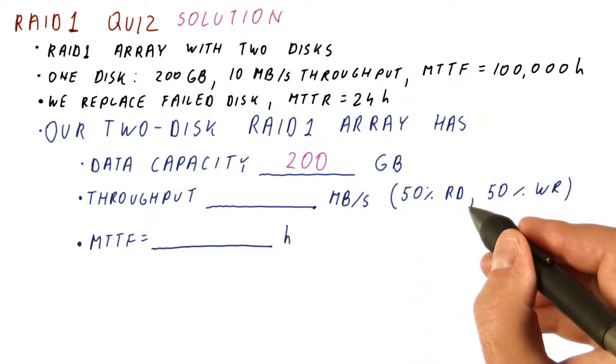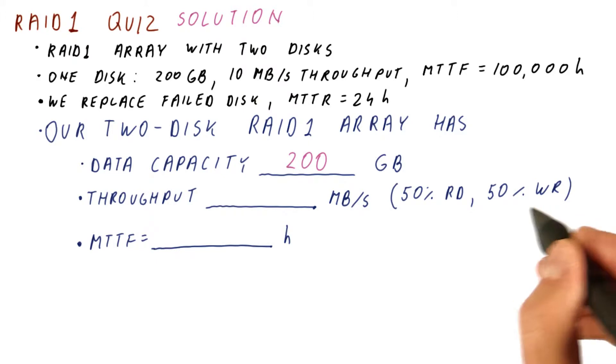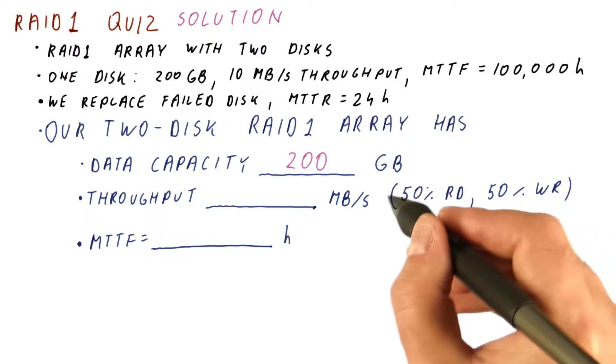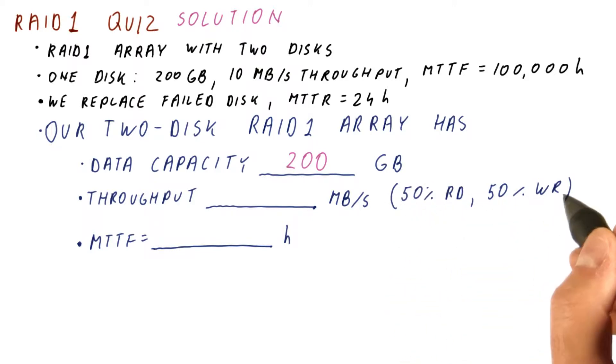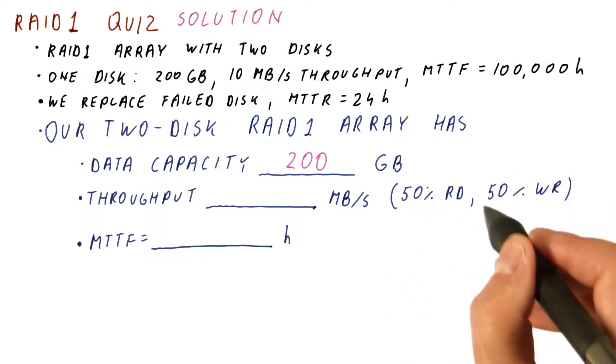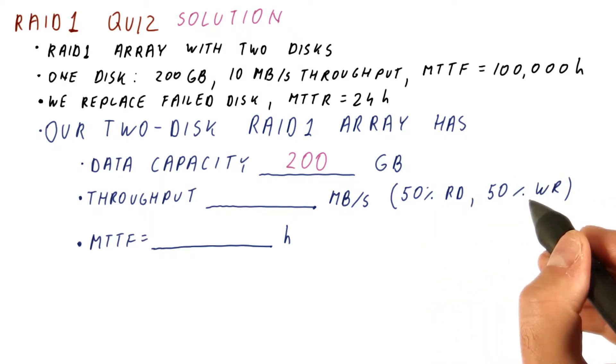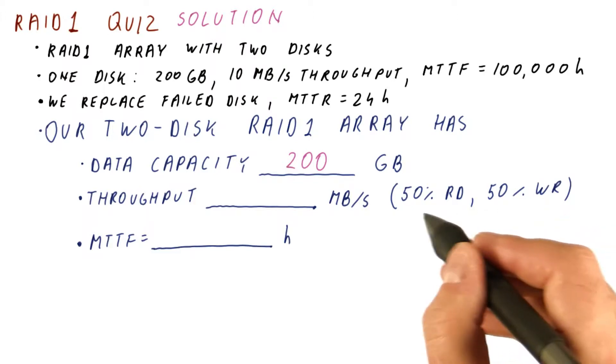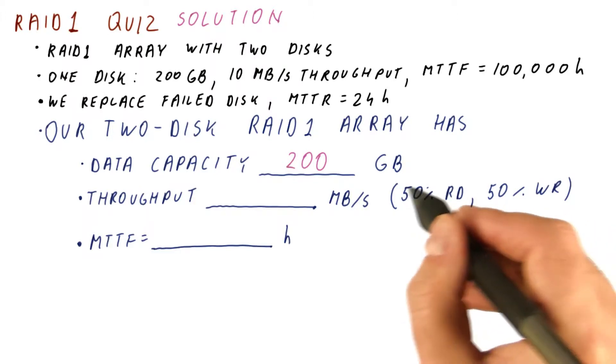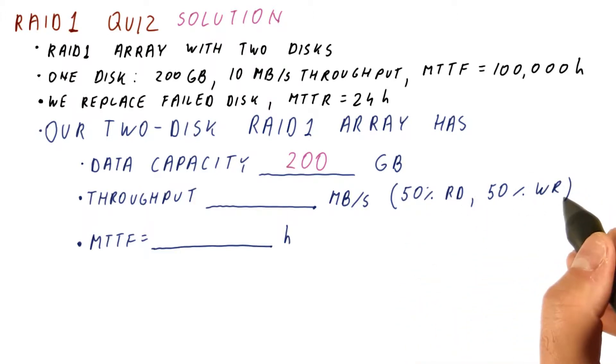If half of the requests are reads and the other half are writes, then in any given second, we will be spending one-third of a second on the reads, and we will be spending two-thirds of the second on the writes. That way we get to do the same number of reads and writes per second. It's just that the reads are twice as fast, so they take half the time of the writes in that same second.